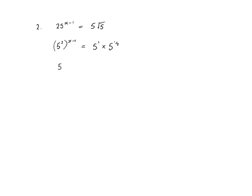Simplifying, we get 5 to the power of 2x minus 2 equals 5 to the power of 3 over 2. Therefore 2x minus 2 must equal 3 over 2. Rearranging gives 2x equals 7 over 2, and therefore x equals 7 over 4.